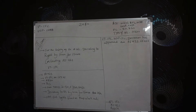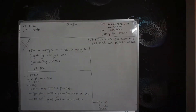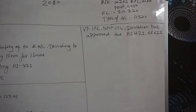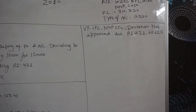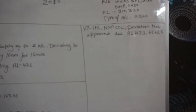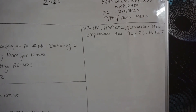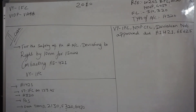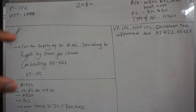In this case, the deviation was not approved by ATC. You can see in the ATC part: Victor Tango Foxtrot India Foxtrot Charlie, Nagpur Control — deviation not approved due Air India 421 and IndiGo 625. After the ATC reply, I responded: for the safety of aircraft and passengers, deviating to right by ten nautical miles for fifteen minutes, and contacting Air India 421.